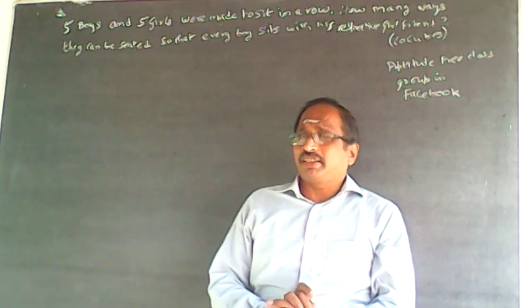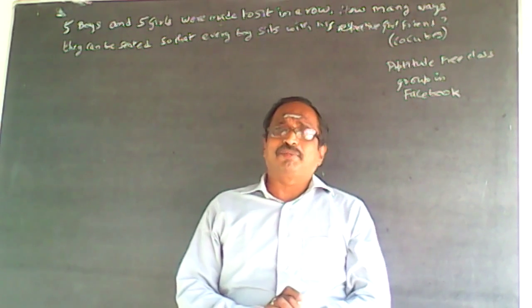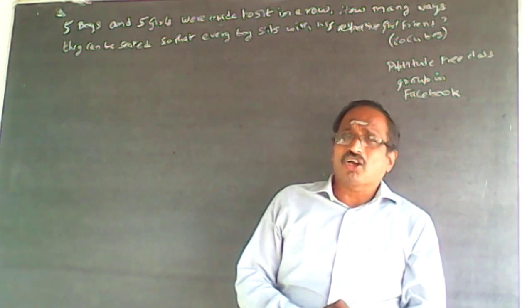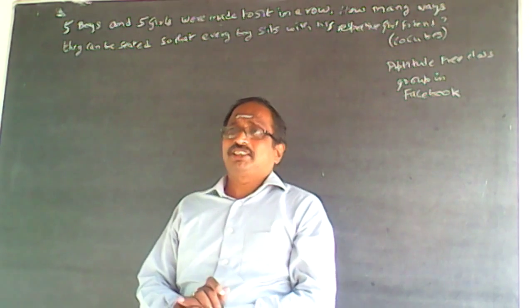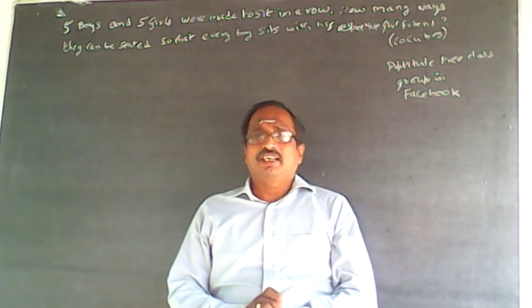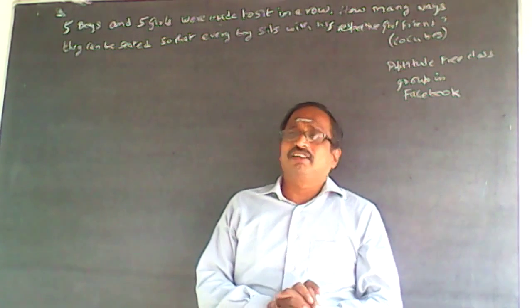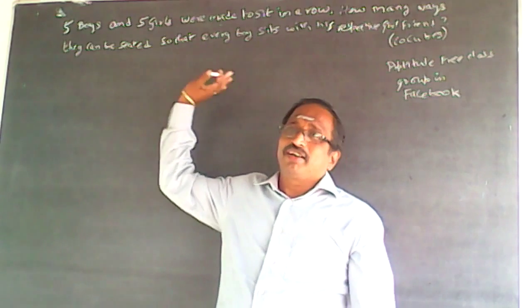Now ten people are there. Five of them are boys and five of them are girls. The question is how many combinations are possible so that each boy sits next to his girlfriend, next to his girlfriend.